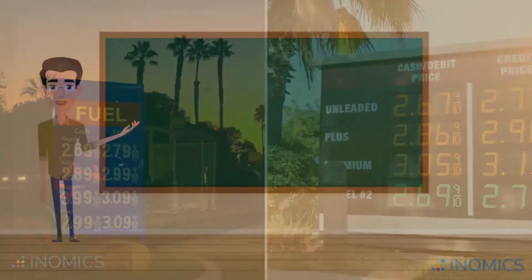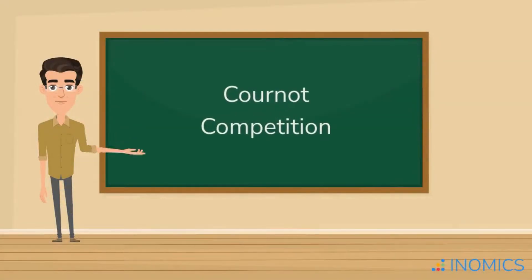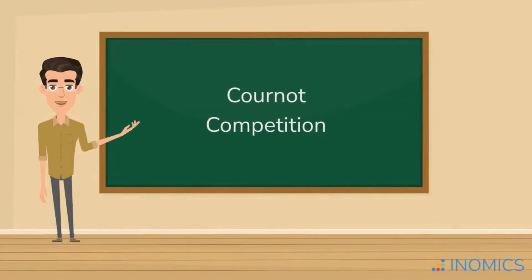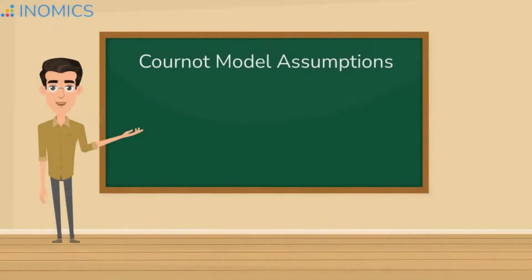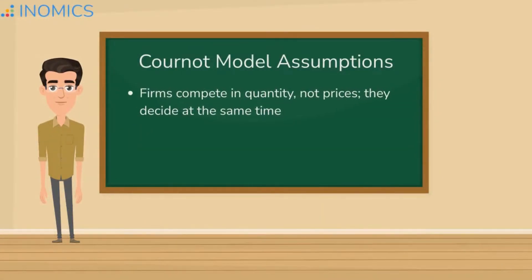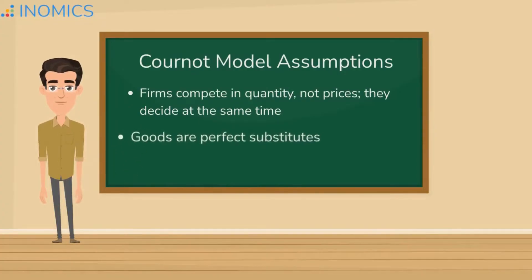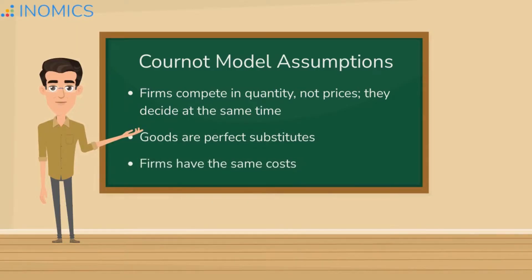Second, Cournot competition is the second type of competition we'll look at today. In Cournot competition, a number of firms compete in quantity instead of in prices. Like in Bertrand competition, the Cournot model also assumes that products are perfect substitutes and that each firm makes its decisions at the same time. Here the main difference is that the firm's decision is the quantity to produce, not the price to sell at. The Cournot model assumes that prices are set by the market, not by firms.